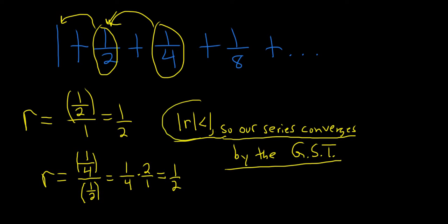Because the absolute value of r is less than 1, our series converges by the geometric series test. It's almost like a little mini proof. Very important.